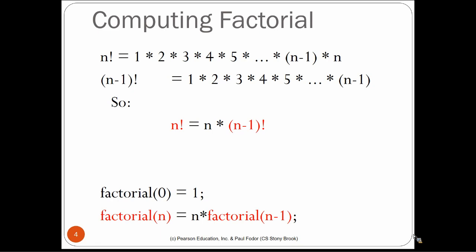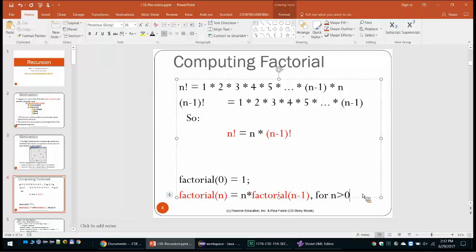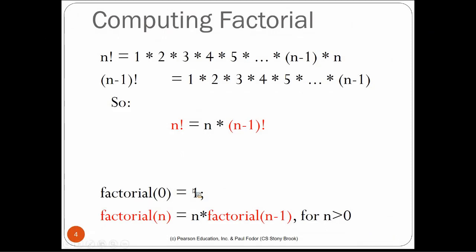We can write the factorial function recursively: the base case is factorial(0) = 1, and then factorial(n) for any n ≥ 1 equals n × factorial(n−1). This applies for all n > 0. The first formula is the base case and the second is the recursive case, called the recursive relation.